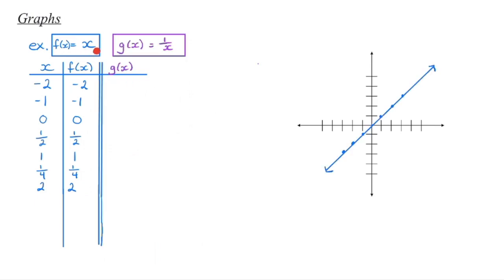We're now going to take the reciprocal of this function. So x over 1 flipped around gives us 1 over x. I'm going to use these same values for x, substitute them in, and find the y-coordinates. Starting with x equals negative 2: 1 divided by negative 2 is negative one half. So when x is negative 2, y is negative one half — we can plot that point. When x is negative 1, 1 divided by negative 1 is negative 1.